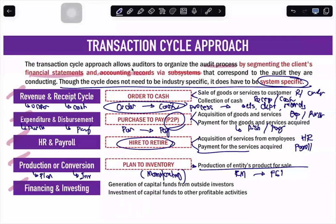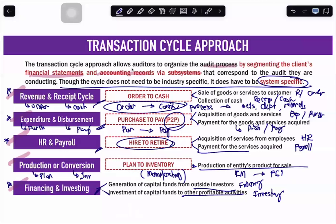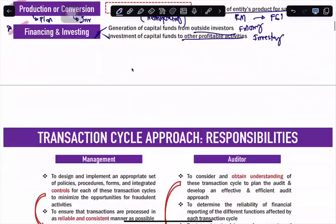We also have the financing and investing cycle. It is composed of two items: the generation of capital funds from outside investors, which is your financing, and the investment of capital funds into other profitable activities, which is your investing process. For this session, we will only focus on four cycles — revenue-receipt, expenditure and disbursement, HRM payroll, and financing and investing — because most entities have these. Production or conversion applies only to manufacturing entities, so we will not discuss it. We will focus on the four main cycles: R&R, P2P, HRM payroll, and financing and investing.